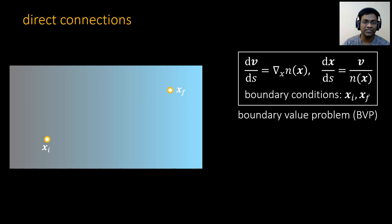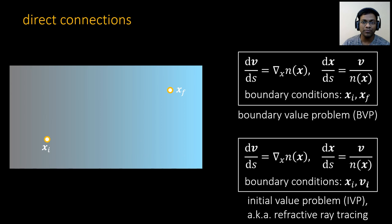So we need to find a curve that passes through initial position xI and final position xF and satisfies the differential equations. This is known as a boundary value problem in the literature. We know how to solve a similar problem: given initial position xI and initial velocity vI, compute the curve for any distance. This is known as IVP or refractive ray tracing in the literature, which we solve using numerical integration.